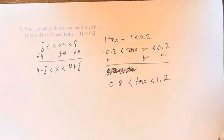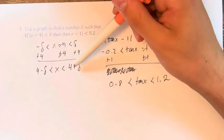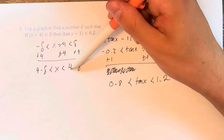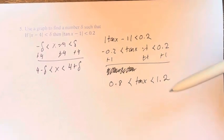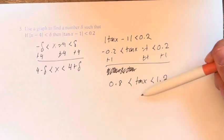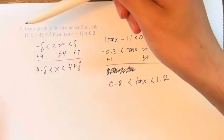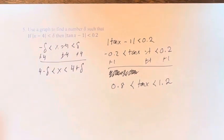So we're basically looking for a delta such that if you go no more than delta away from 4, then you will go no further than this range of values when you plug that value of x into the tangent function. And we're asked to use a graph to find such a number, which I think will be really helpful in terms of visualizing what we're actually doing here.